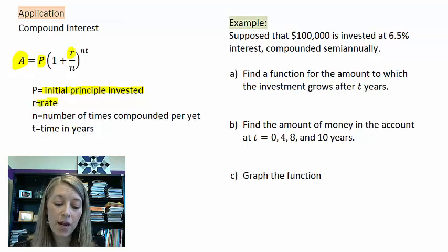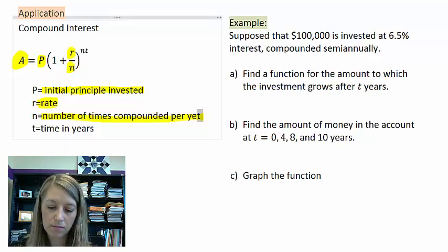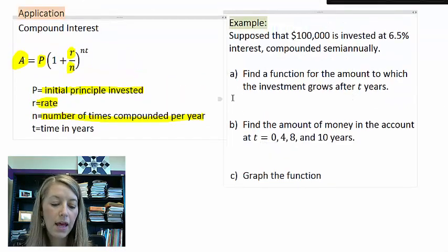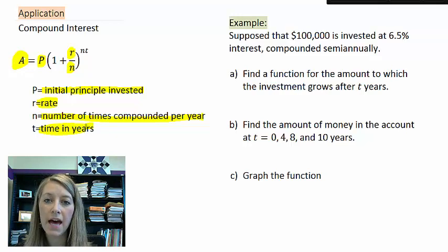Rate is the percentage rate, how high a percent you're getting. Nowadays it's not very much. A while ago it was quite a bit more. N is the number of times it's compounded per year. And last, t stands for the amount of time in years you've had this investment.